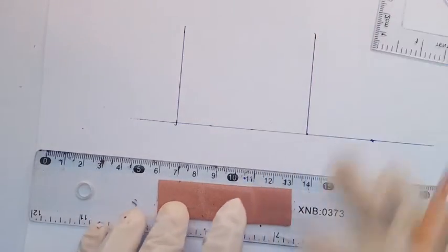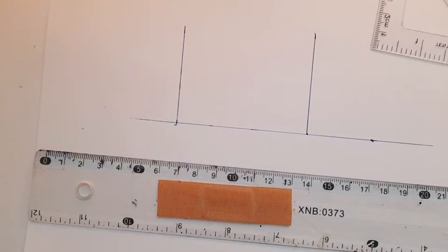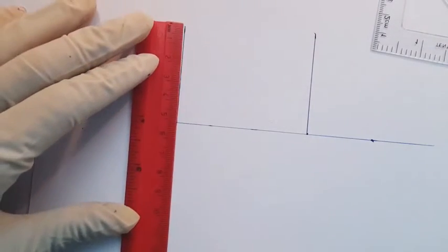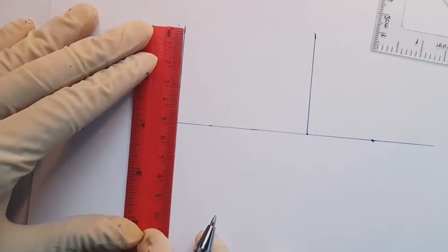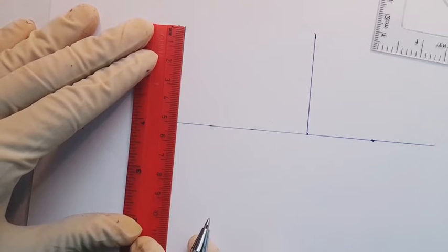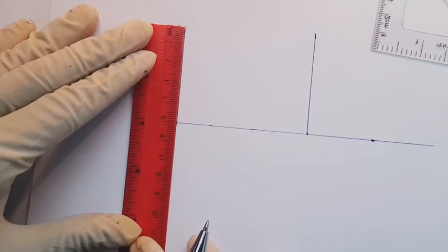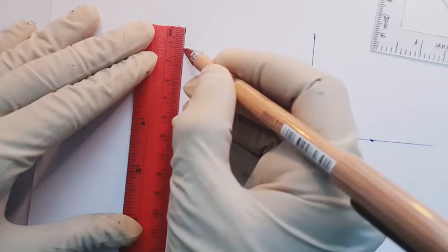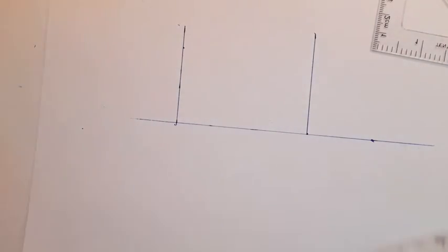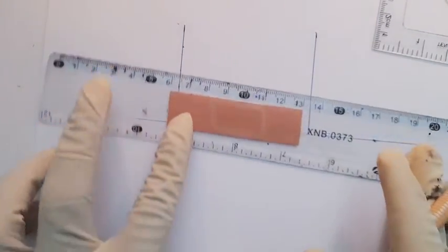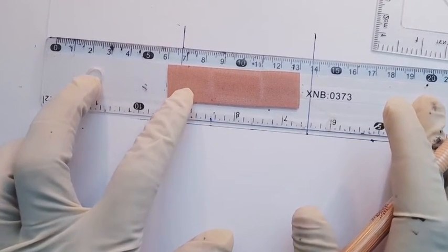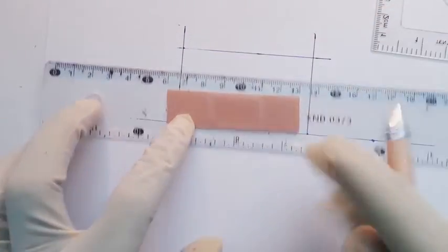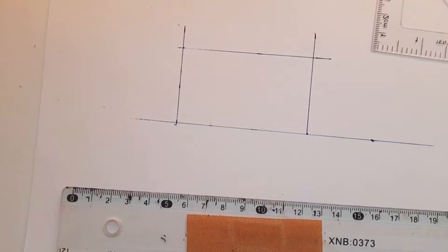Now let's measure our width, which is 40. So this is one, two, three, four. Now we complete our rectangle. This is our rectangle that measures 70 by 40.